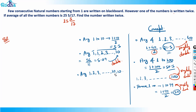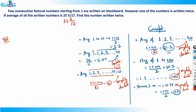If instead I write 10 twice: sum of 1 to 10 is 55, plus 10 = 65, divided by 11 numbers ≈ 6. There are 11 numbers total and the average is still roughly half. This will not change. So even if a number is written twice, the average remains roughly half of the total count.